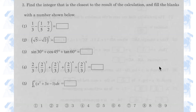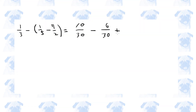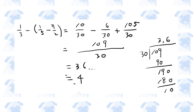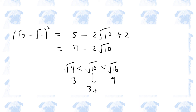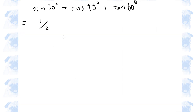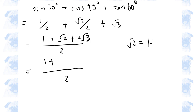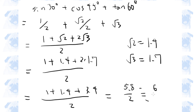Section 3, the final section of this paper. Estimating: 3.6 is roughly 4. Root 10 is between root 9 and root 16, which are 3 and 4 respectively, so root 10 is about 3 point something. 7 minus 2 times 3 point something is going to be roughly 1.